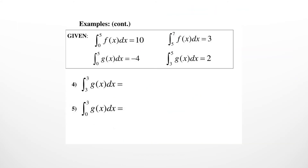Quickly look at questions 4 and 5. If you have to find from 3 to 3 of g(x) dx, there is no need to look anywhere — if the upper and lower limits are the same, just write 0. That is your answer.